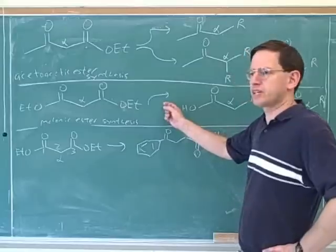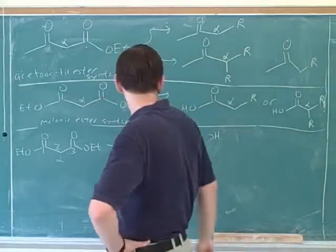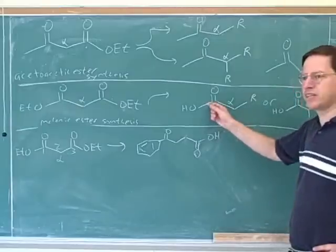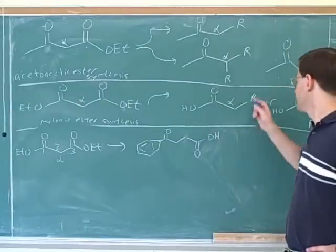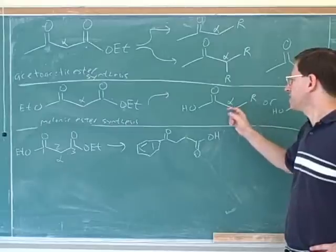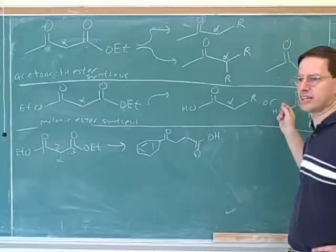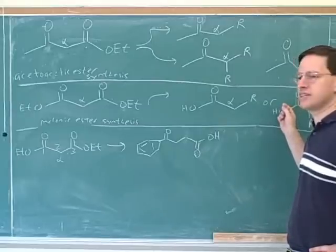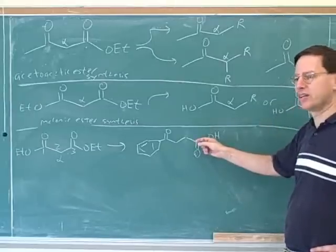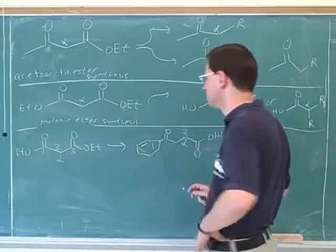Now, we're planning to use this basic approach where we start with a 1,3-dicarbonyl, which is a diester, and we're going to make a carboxylic acid where there's at least one carbon substituent on the alpha carbon. The alpha carbon to whom? The alpha carbon to the carboxylic acid. So we're going to make a product with a carboxylic acid. Well, where's our carboxylic acid? Here. So where is its alpha carbon? Here. So this must be the number two carbon.